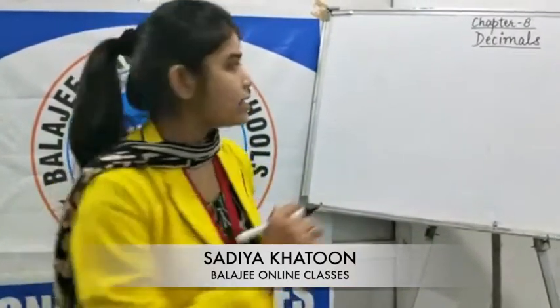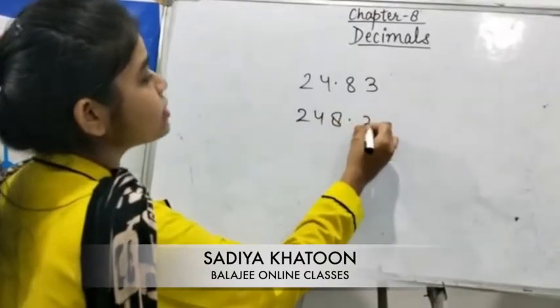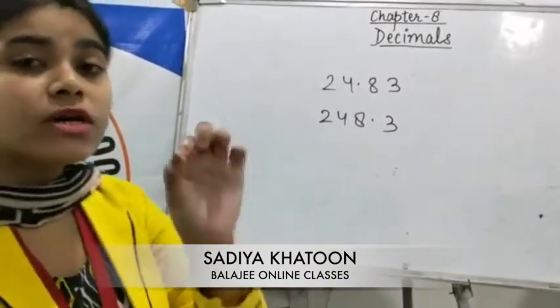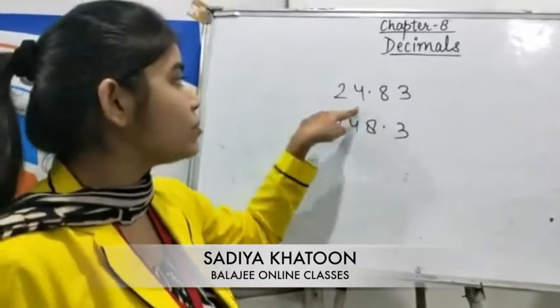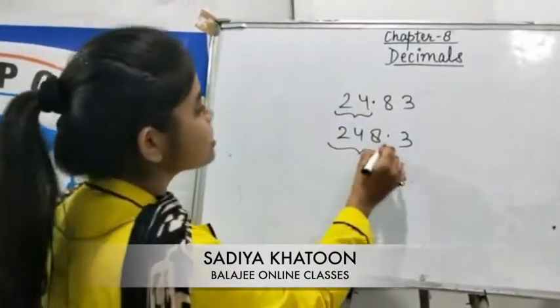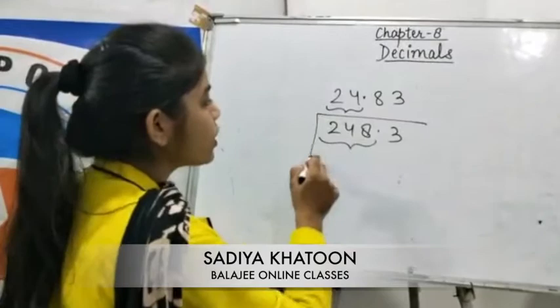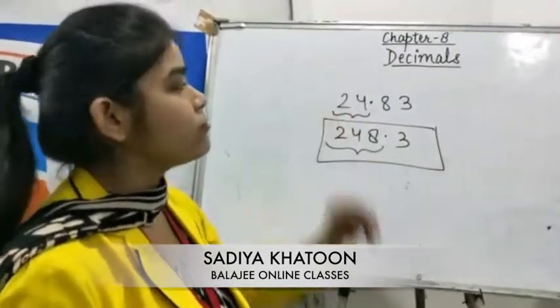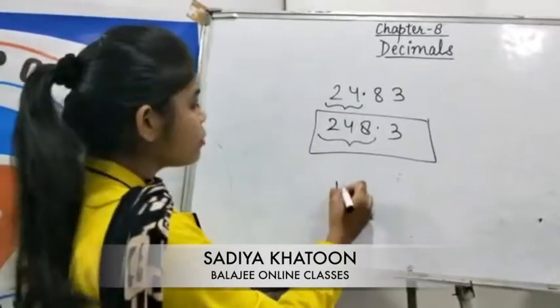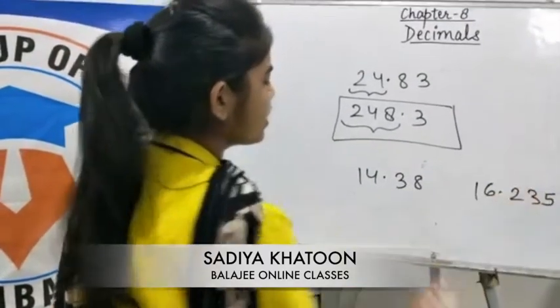The next topic is the comparison of decimals — determining which decimal number is greater and which is smaller. Take the example 24.83 and 248.3. First, look at the whole number part — the number before the decimal. Here it is 24, and here it is 248, so there is a clear comparison: 248.3 is greater than 24.83. Another example: 14.38 and 16.235 also shows a clear comparison in the whole number part.